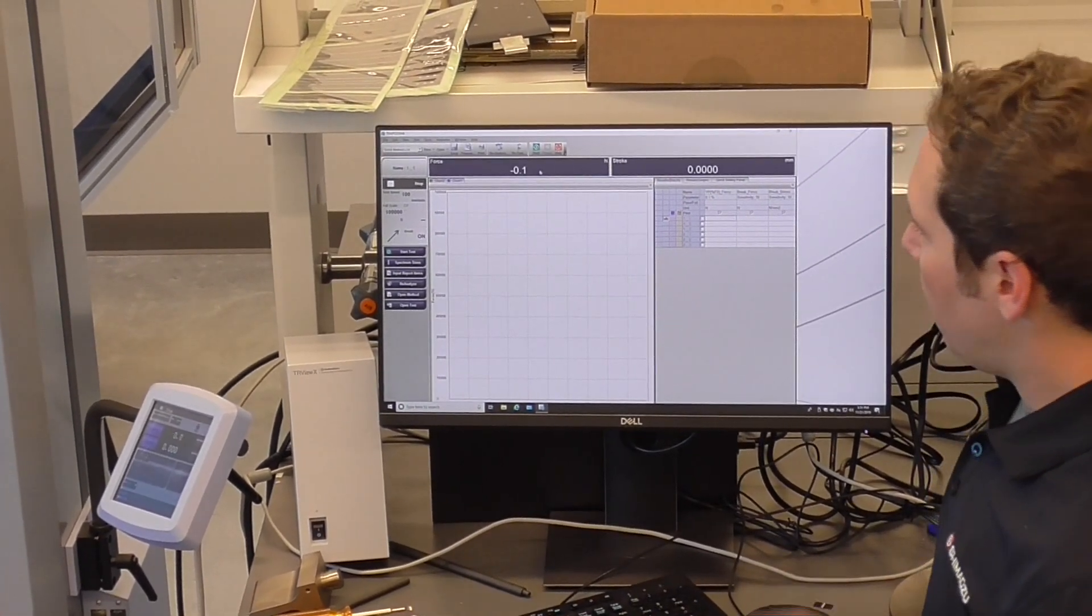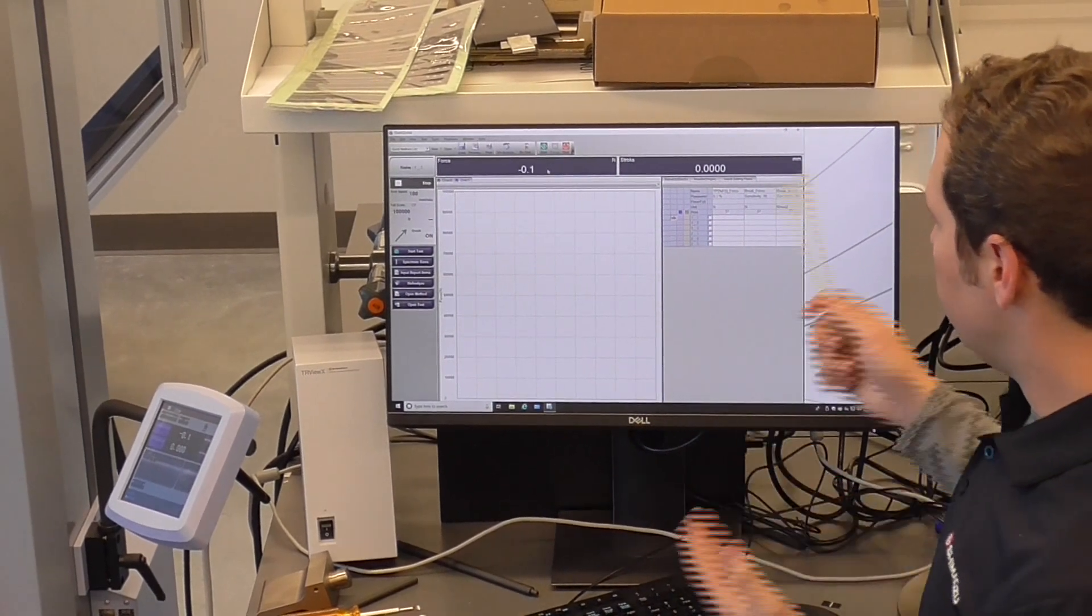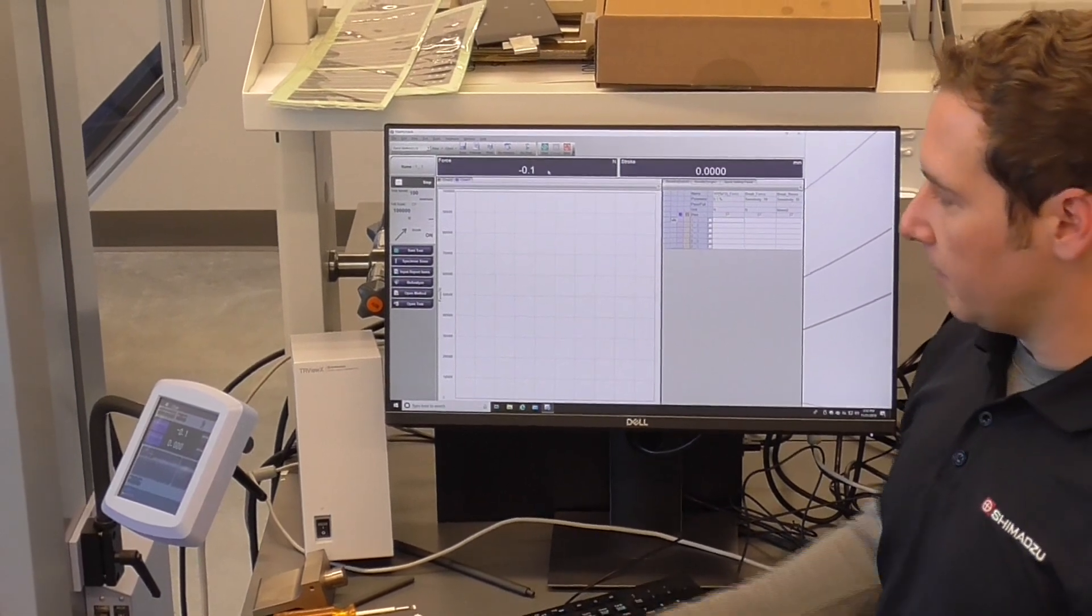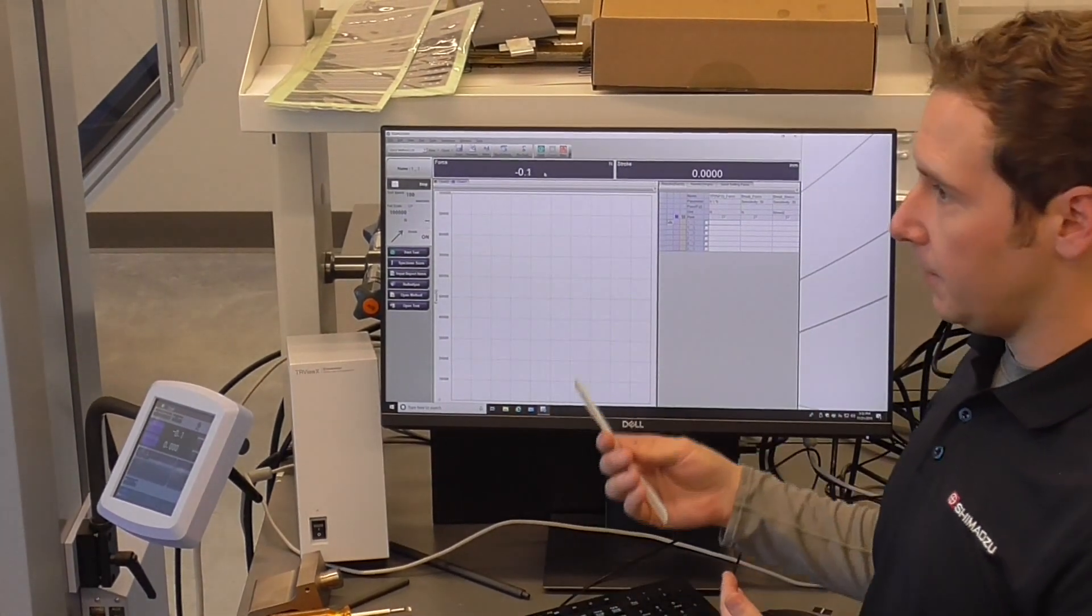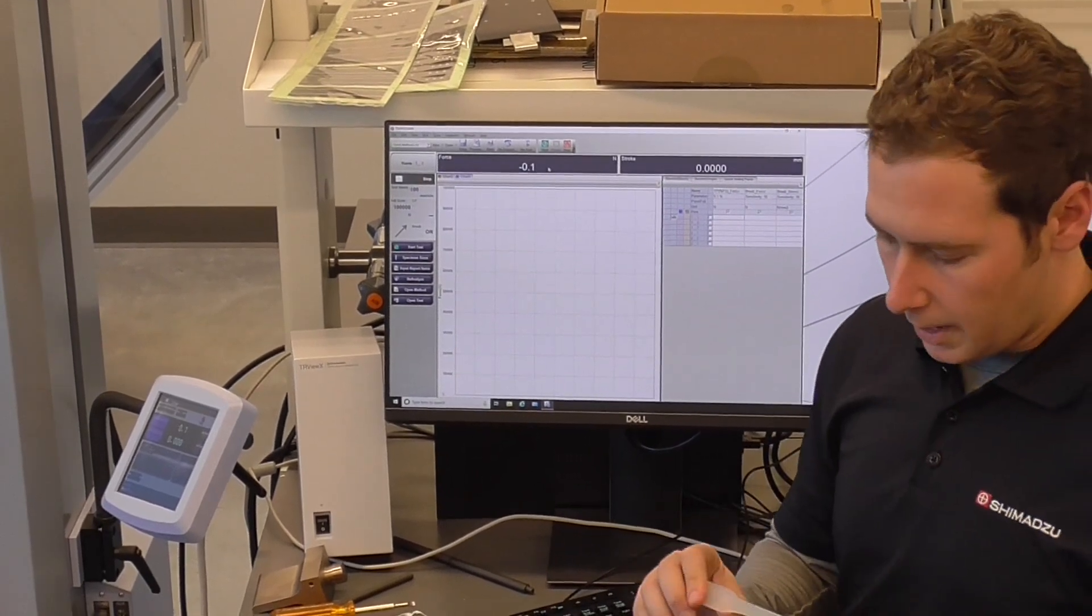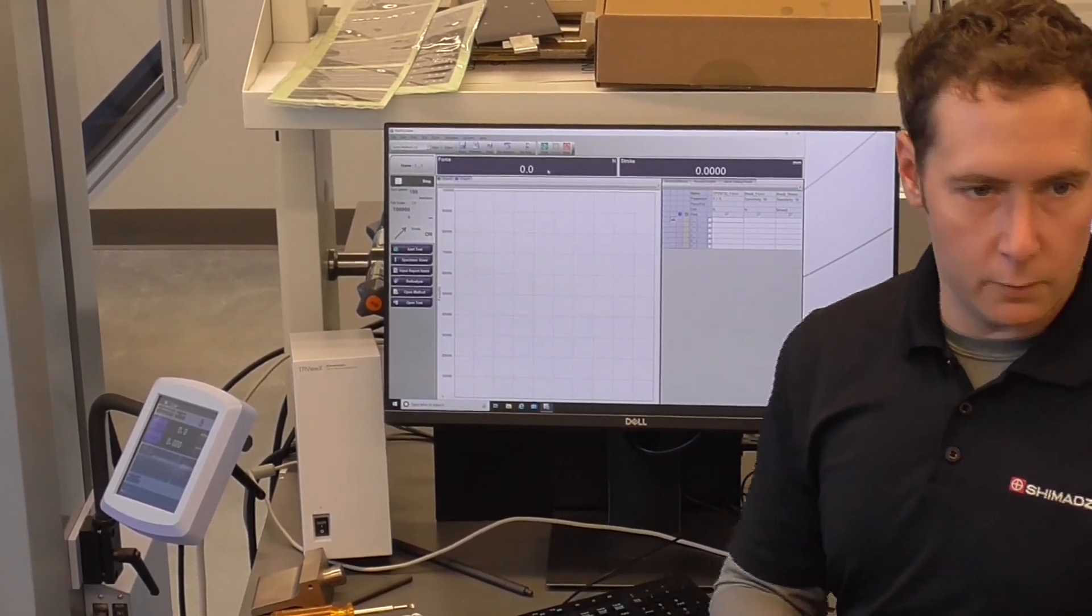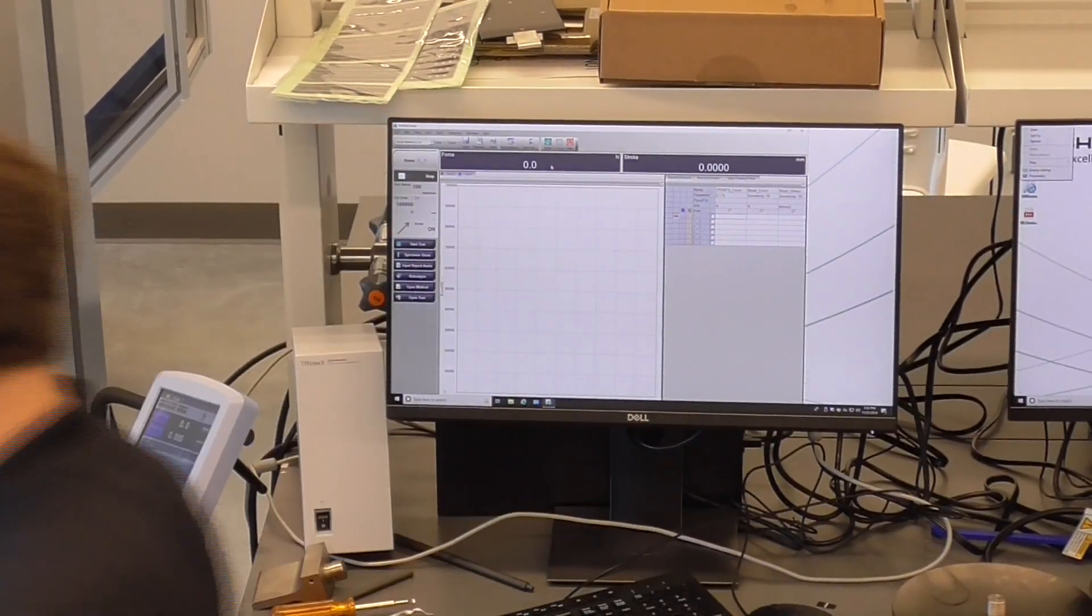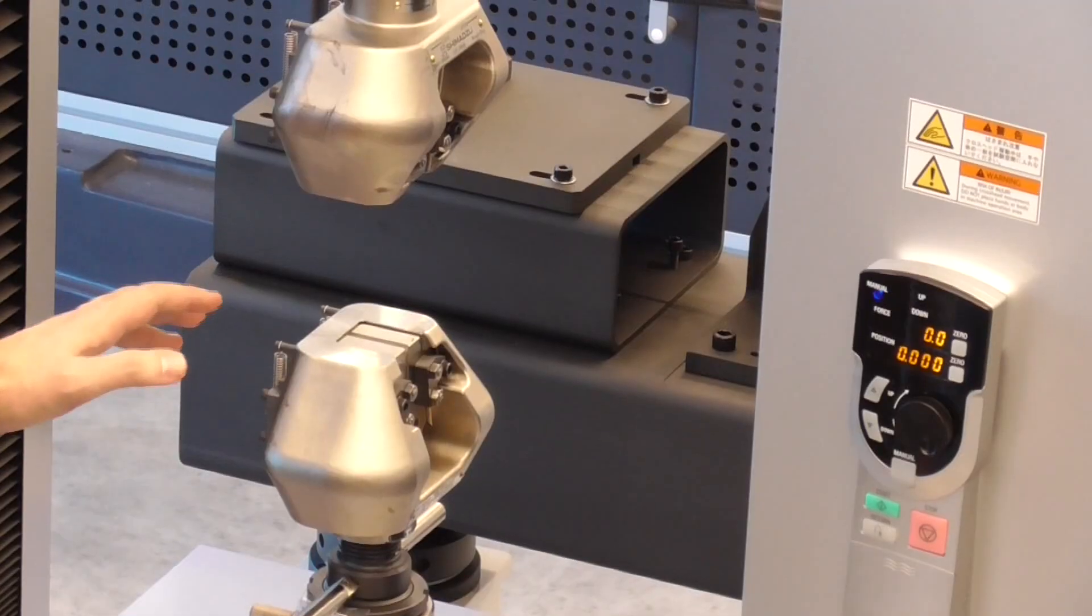Great. So, we have our test parameters loaded. We have our data processing points selected. This is kind of unscientific, but just to kind of complete the workflow of writing method and running a test. We're gonna run this little plastic dog bone right here. I don't really know what material this is. I don't know what an ideal test condition this is. So, we're both gonna see how it does.